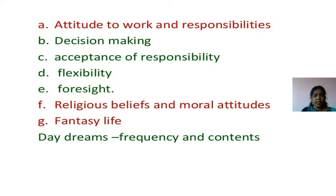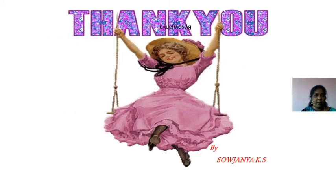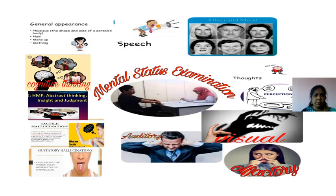Religion, beliefs, and moral attitudes. Fantasy: daydreaming — frequency and content. Habits: eating pattern — regular or irregular; elimination — regular or irregular; sleep pattern — regular or irregular; use of drugs, alcohol, and tobacco. These are all the areas we take in the history of the patient.